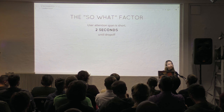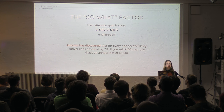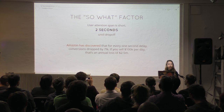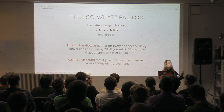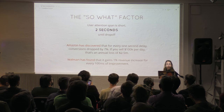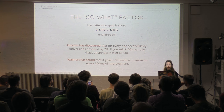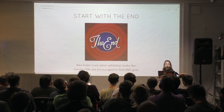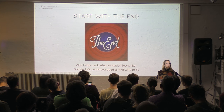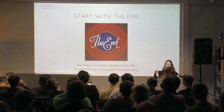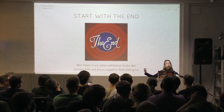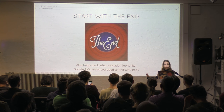We have about two seconds before attention totally drops off. Amazon discovered that for every one-second delay, conversions dropped by 7%. Walmart found that for every 1% improvement, it gains 1% revenue increase per 100 milliseconds of improvement. When we're dealing with animation, we're dealing with perceived performance — how do we find the most clear and useful path from one place in our app to another for our user?